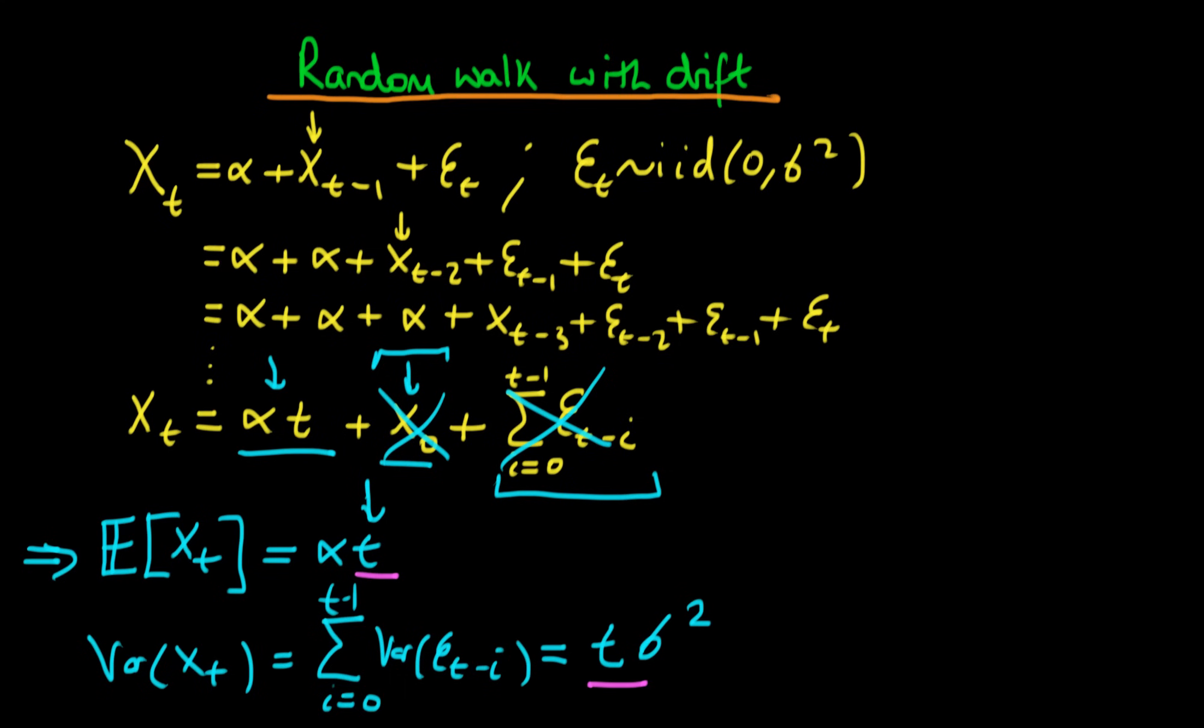so how would this time series look if we were to draw a graph of it so if on the horizontal axis we have t and on the vertical we have xt